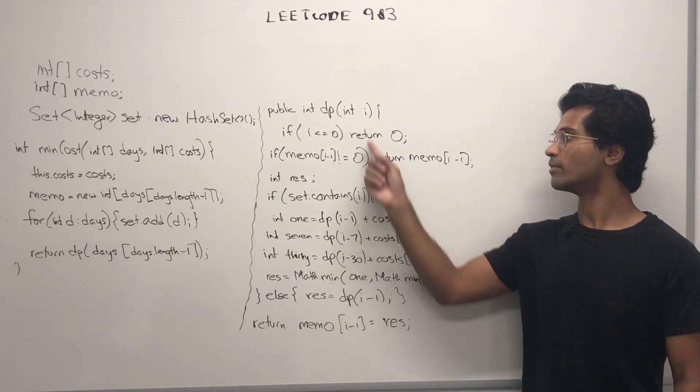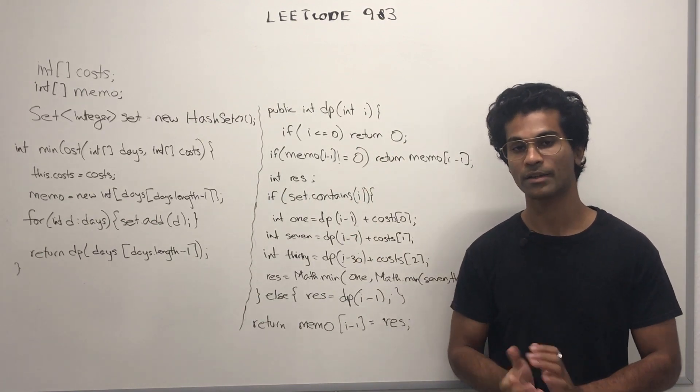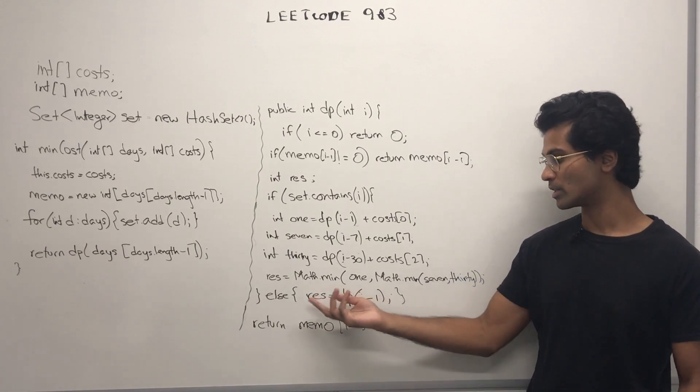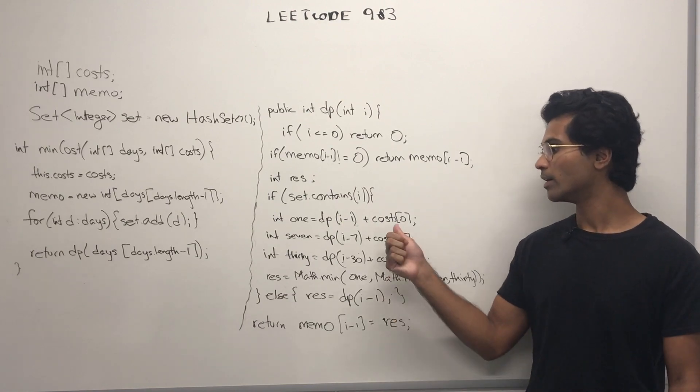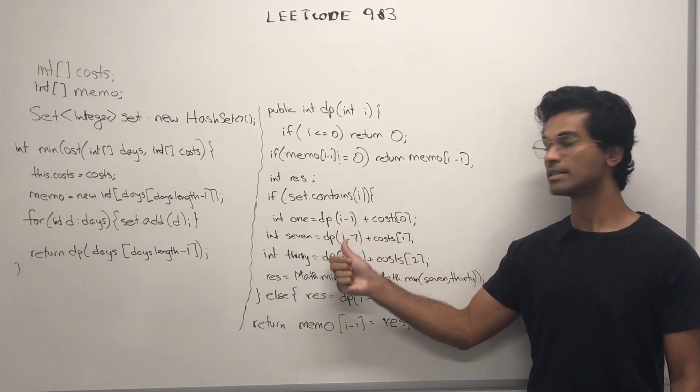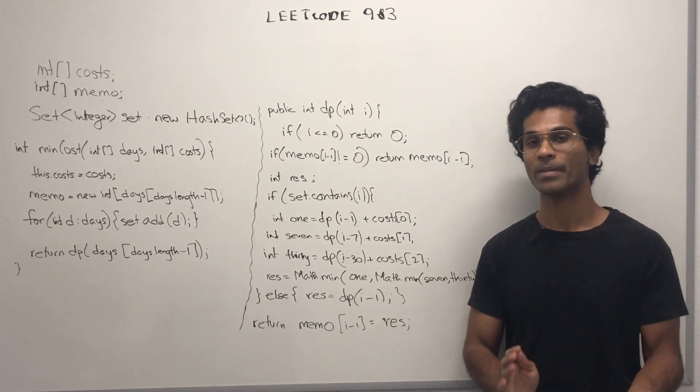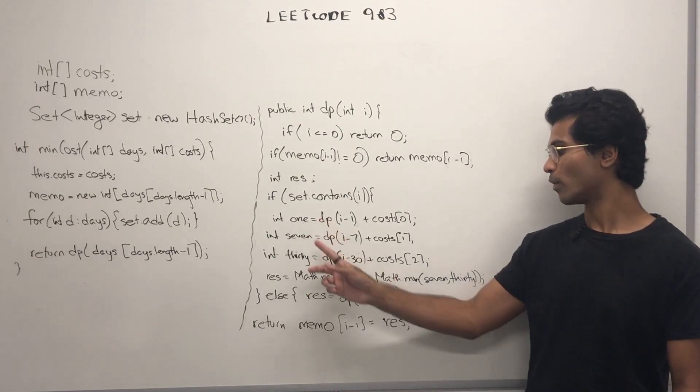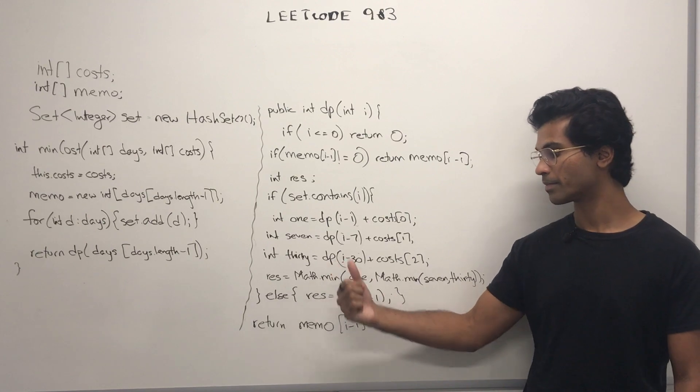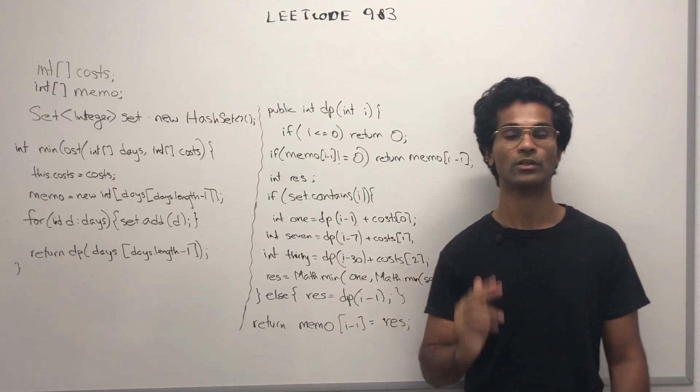Next, we check to see if i exists in the set we want. And if it doesn't, we simply call it dp of i minus 1. Otherwise, we check our three possibilities. This is a 1-day, 7-day, and 30-day pass. Based on the type of pass we're using, we're going to get a result. And we want the minimum out of those three. Ultimately, we store it in our cache and we return.